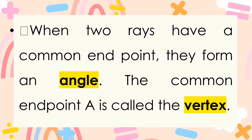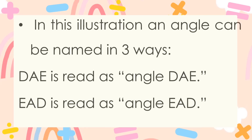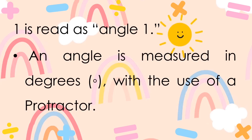Going back, when two rays have a common endpoint, they form an angle. The common endpoint A is called the vertex. An angle can be named in three different ways: DAE is read as angle DAE, EAD is read as angle EAD, and 1 is read as angle 1. An angle is measured in degrees with the use of a protractor — when you use a protractor, you can tell what degree the angle is.